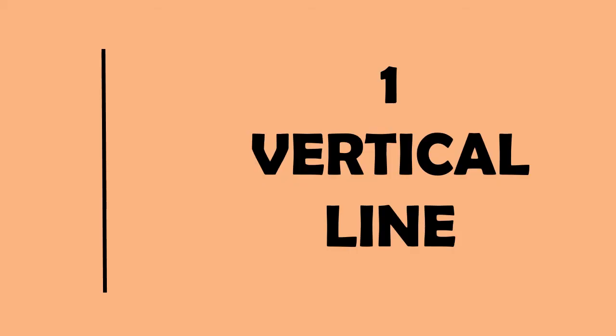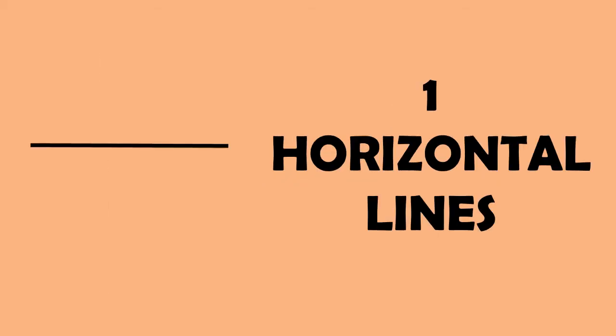Now, this is L. Students, count and tell me how many horizontal and vertical lines it has. Yes, it has one vertical line and one horizontal line.